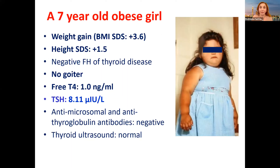A different story: this seven-year-old obese girl came with weight gain, but importantly she is very tall — height is plus 1.5 SDS. This is a very important differentiating point in children. This is simple obesity; she's not short. Negative family history of thyroid disease, no goiter, normal T4, TSH 8.11, negative antibodies, normal ultrasound, and her mother reports she eats a lot and doesn't practice sports.